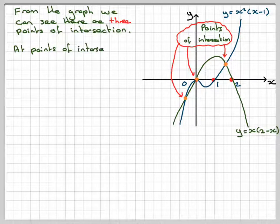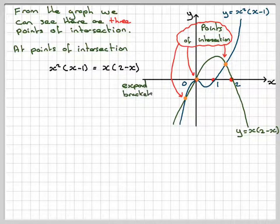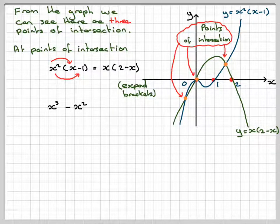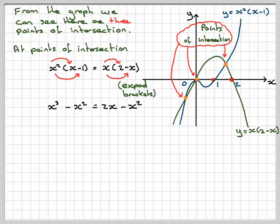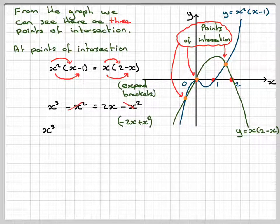At the points of intersection, x²(x - 1) = x(2 - x). Expanding the brackets: x²·x = x³, x²·(-1) = -x², x·2 = 2x, and x·(-x) = -x². So we have x³ - x² = 2x - x². Taking everything to one side, the -x² terms cancel, leaving x³ - 2x = 0.